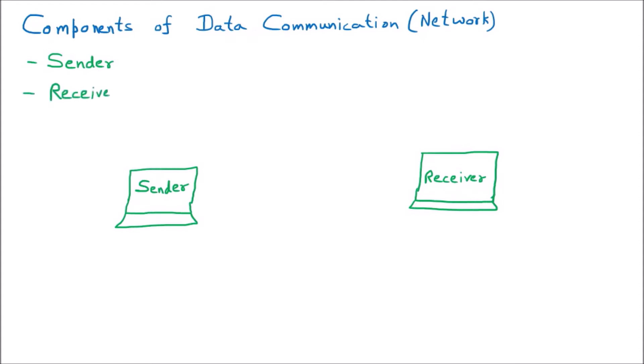The sender is going to send data. If I am the sender and I want to send to you, then I will have some kind of information or data. That information or data is the message. So the sender has some kind of message to send. The next component of data communication is the message, which is sent by the sender to the receiver.